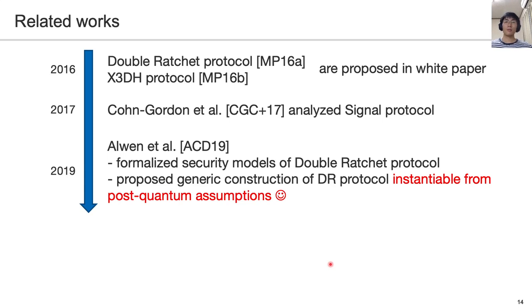The double ratchet protocol and the X3DH protocol were proposed in 2016. Afterwards, Gordon et al. analyzed the security of the Signal protocol. In 2019, Alven et al. formalized the security models of the double ratchet protocol and proposed a generic construction of the double ratchet protocol. It can be instantiated from post-quantum assumptions. Thus, we already have a post-quantum double ratchet protocol.